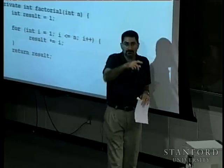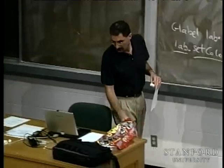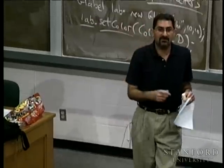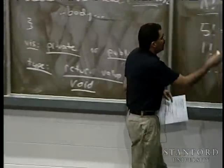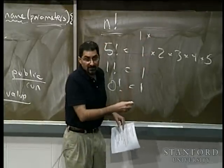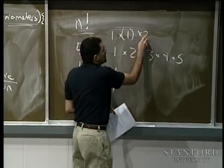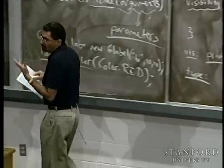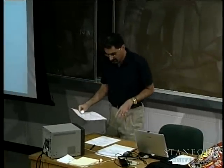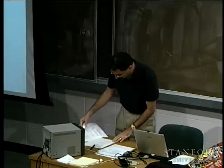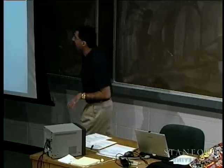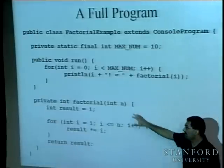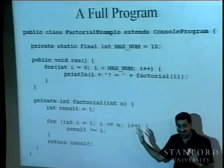Every method gets its own declared variables — `result` inside factorial lives only until the end of that method. Run is just another method; it happens to be the special one we always start executing from. But every method has its own variable space, completely independent of other methods.